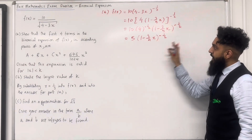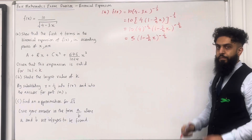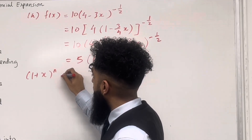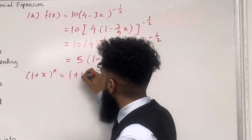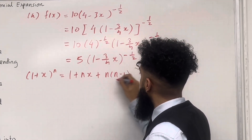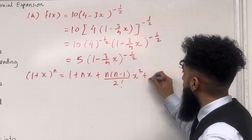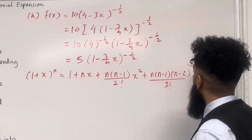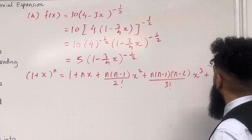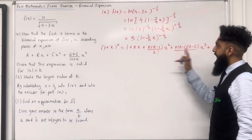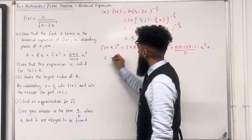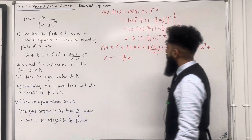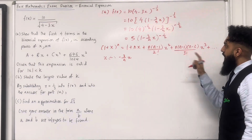Now we can expand this using the binomial expansion formula because the first term is 1. Here is the binomial expansion formula: (1 + x) to the power n is equal to 1 plus nx plus n(n minus 1) over 2 factorial x squared plus n(n minus 1)(n minus 2) over 3 factorial x cubed plus dot dot dot. We're going to replace the x's in this formula with minus 3 over 4 x, and replace the n's with minus a half.